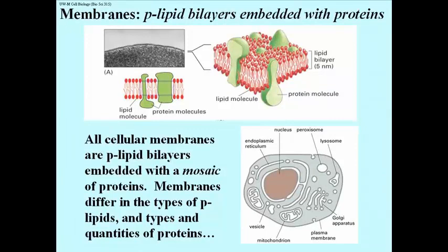The flashing blue box surrounds a region of proteins in a membrane. You can ask yourself what properties does that part of each of these two proteins have to have in order to be stably incorporated into a phospholipid bilayer membrane.